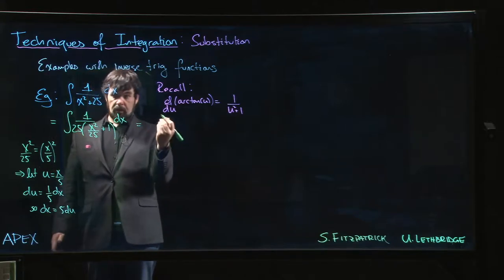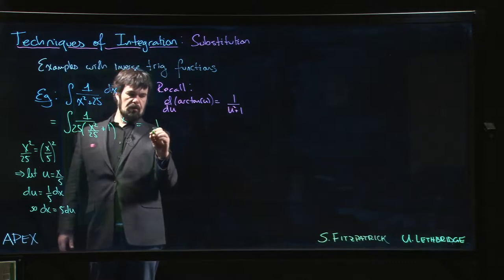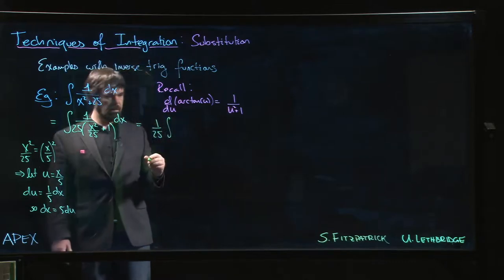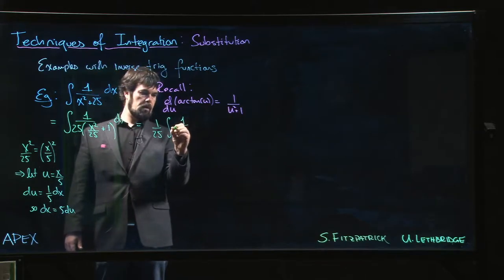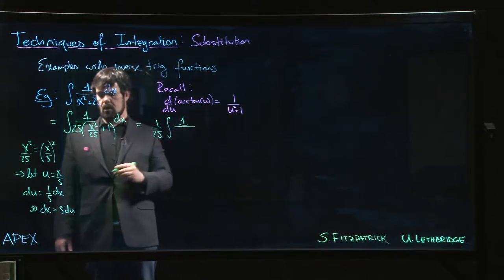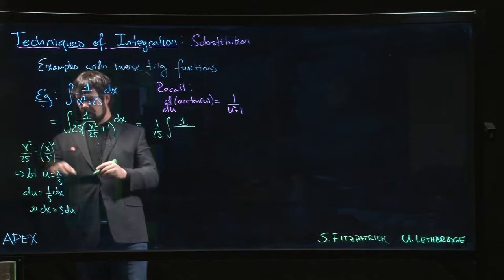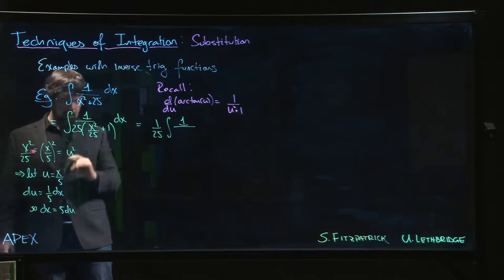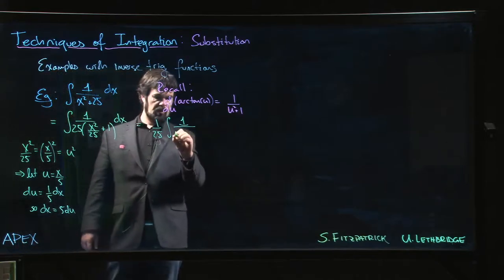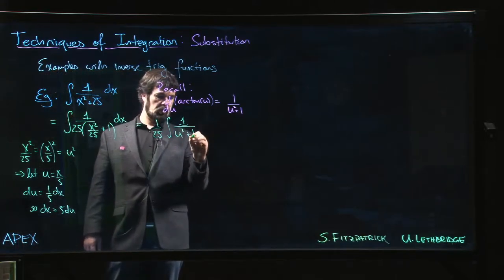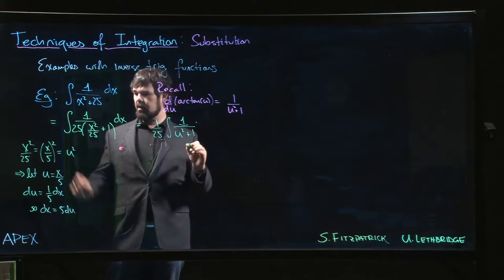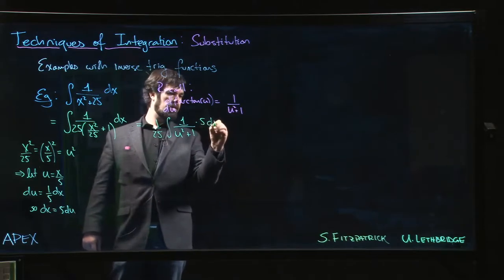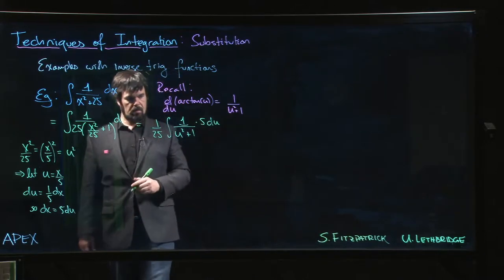So let's make those changes now. 1/25, that's a constant we can put up front. 1/25 times the integral of 1 over—x²/25 is (x/5)², so the point is that this is going to be u² once we make our substitution—so we have u² + 1, and dx becomes 5du.